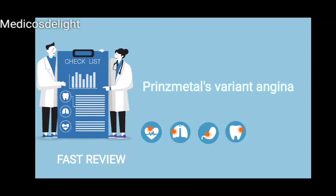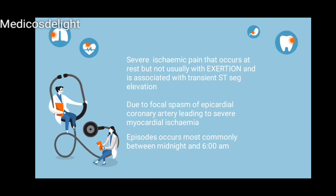Hello everyone. In this video we will be reviewing Prinzmetal's variant angina. This is a severe ischemic pain that occurs at rest but not usually with exertion, and is associated with transient ST segment elevation. This occurs due to focal spasm of the epicardial coronary artery leading to severe myocardial ischemia.